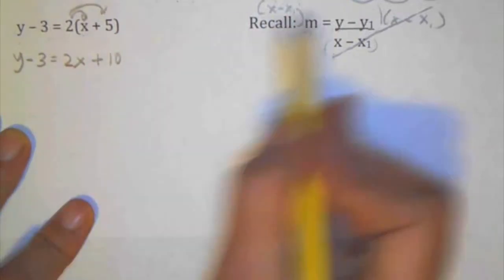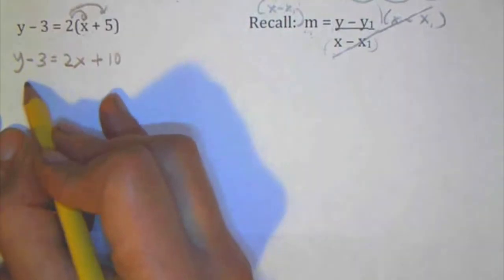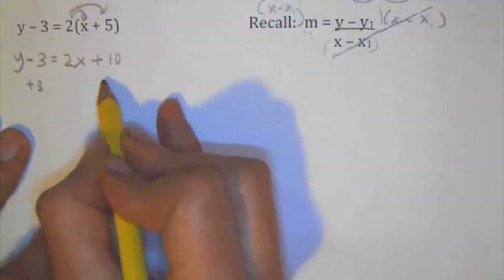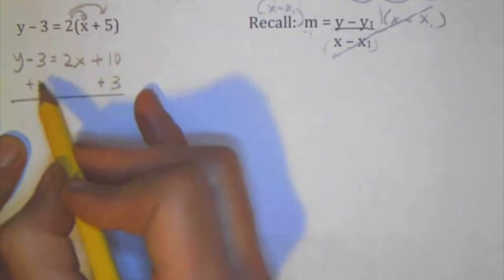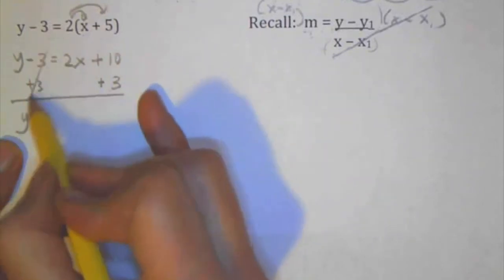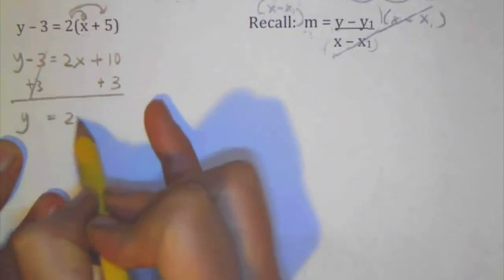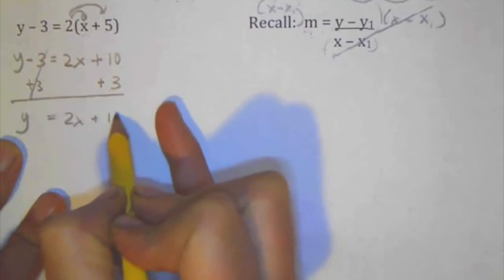Now I'm going to try to get the y by itself. And in order to get rid of the minus here, I'm going to add 3 to both sides. Put it under the term that it is similar to, plus 10. Y, this cancels out, equals 2x plus 13.